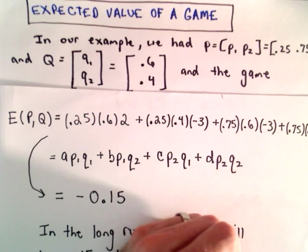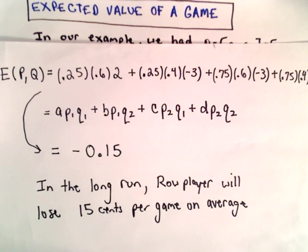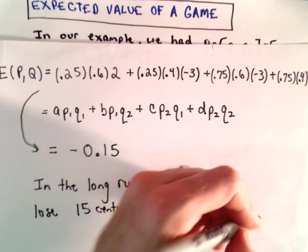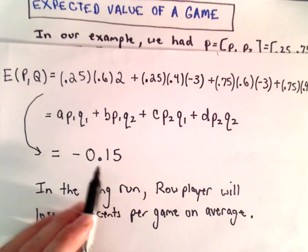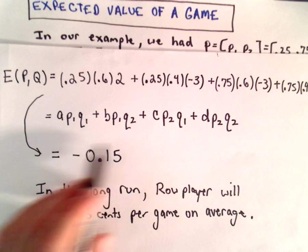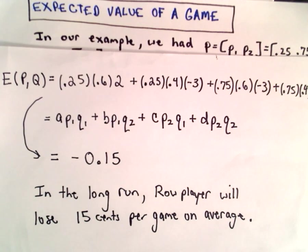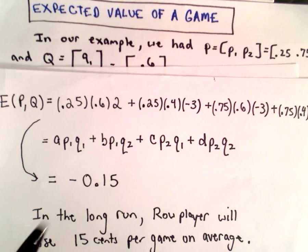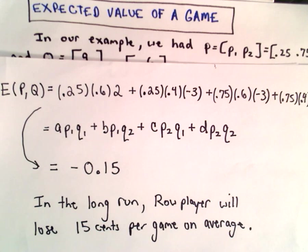They obviously can't lose 15 cents in a single game. But in the long run, they're going to lose 15 cents per game on average. So if they played 100 times, the first player could expect to be down somewhere around $15. So it turns out that using these probabilities, you would want to be the column player because then you're obviously winning a little bit of money.